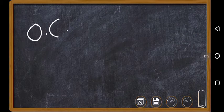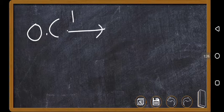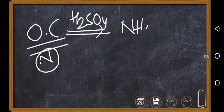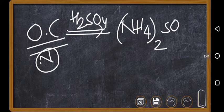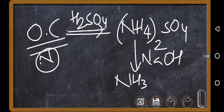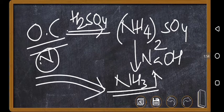In Kjeldahl's method, the organic compound is treated with concentrated H₂SO₄ so that whatever nitrogen is present is completely converted to ammonium sulfate, (NH₄)₂SO₄. This is then treated with excess sodium hydroxide so that the compound releases ammonia gas. So we are converting the nitrogen into ammonia by treating with concentrated sulfuric acid and then with excess sodium hydroxide.